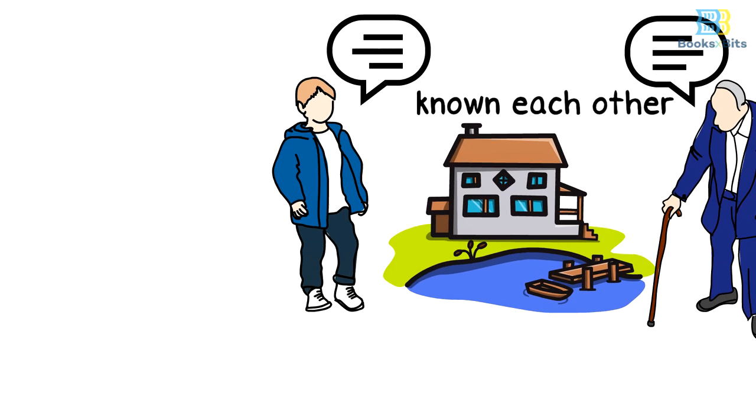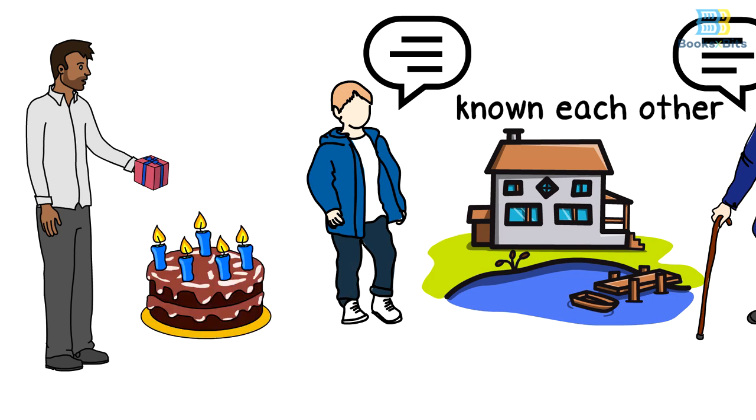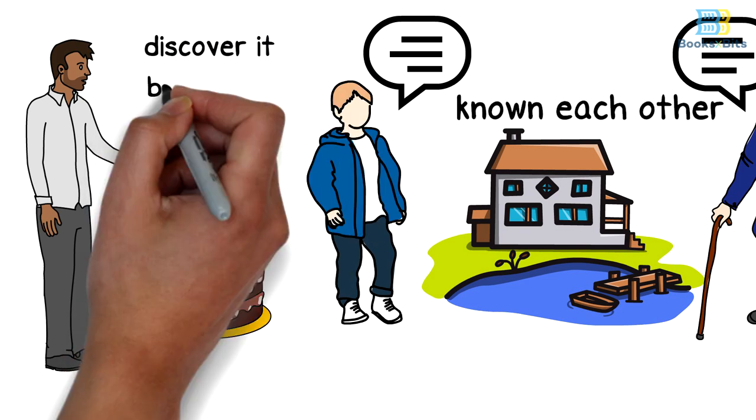The boy wished that one of his relatives would give him this present on his next birthday, but the old man told him that this gift couldn't be given to him by anyone, but he must discover it by himself.